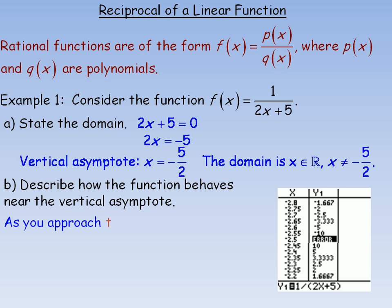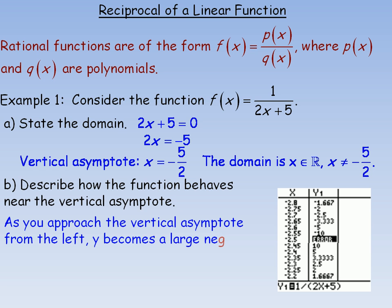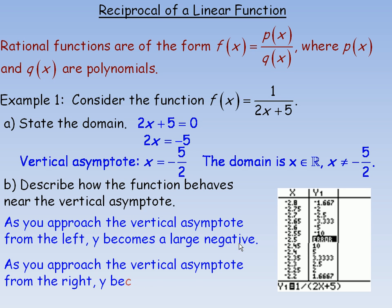To summarize: as you approach the vertical asymptote from the left, y becomes a very large negative. As you approach the vertical asymptote from the right, y becomes a very large positive value. We'll now graph that on the next page.